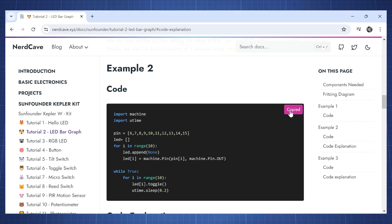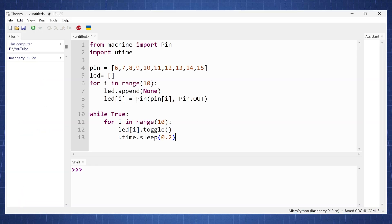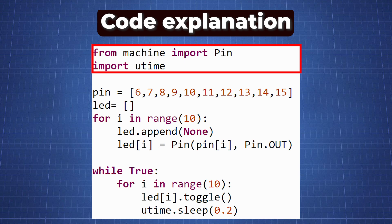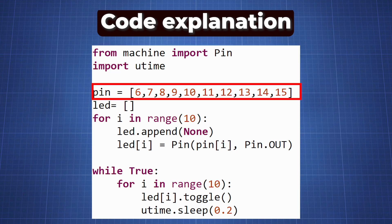Let's copy example 2 from the website and paste that into Thonny. We again import Pin from the machine library and utime to create a small delay. We then create a list that contains the pin numbers where the LEDs are connected, from pin 6 up to pin 15.